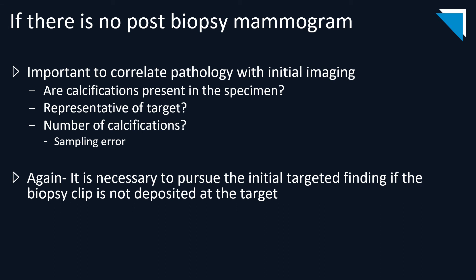If there is no post-biopsy mammogram, it's always important to correlate pathology with initial imaging. Where are the calcifications in the specimen? Does the pathology report mention any? Is it representative of the target you initially saw on screening? Consider the number of calcifications seen on specimen — if there are one, two, or zero calcifications, you always have to consider sampling error. It's necessary to pursue the initial targeted finding if the biopsy clip is not deposited at the target, as we saw in the previous case where the patient had two malignant lesions.